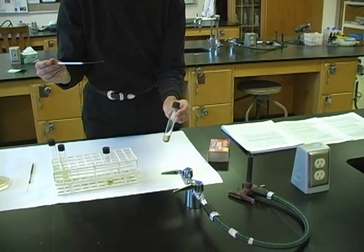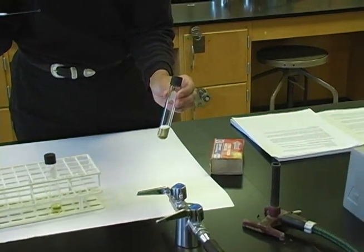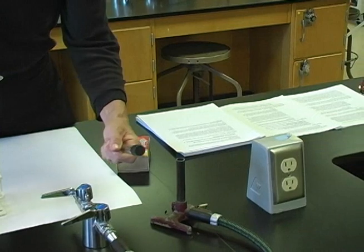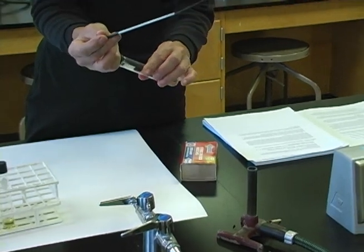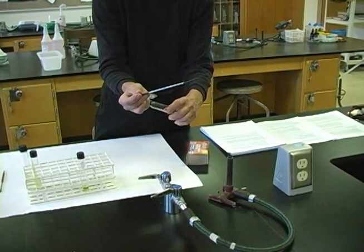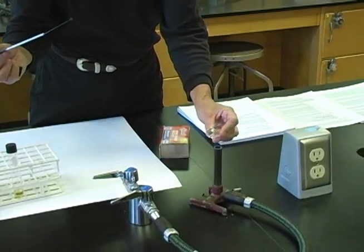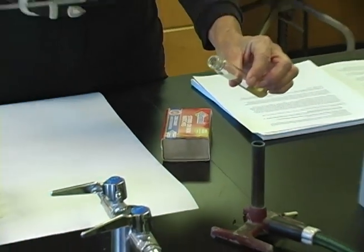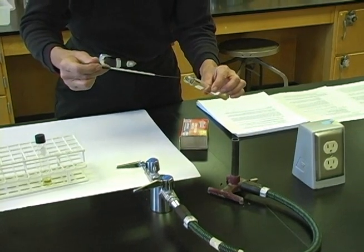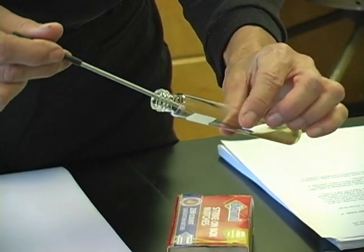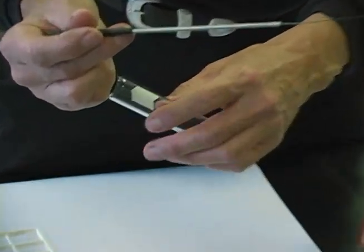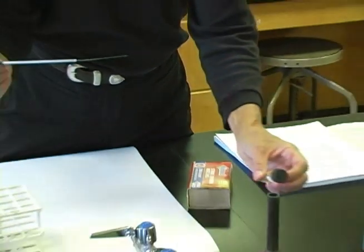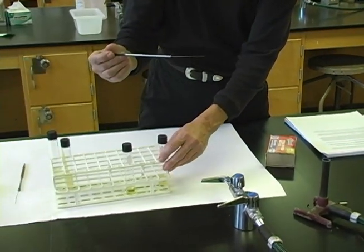Next, flame the cap of the tube containing microbes I wish to transfer. I'll flame by quickly passing the cap three times through the Bunsen burner flame, rotating each time. I'll try to hold the tube almost in a horizontal position. Remove the cap and flame the lips or the opening of the tube three times. I'll place my sterilized, cooled loop into the broth containing my microbes. I'll immerse the loop into the broth. Remove my loop, and then once again flame the lips of my tube. Replace the cap, gently screw it on, flame the cap, and place my original tube into the test tube rack.